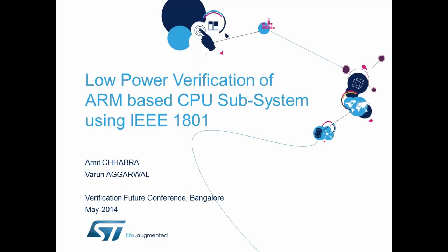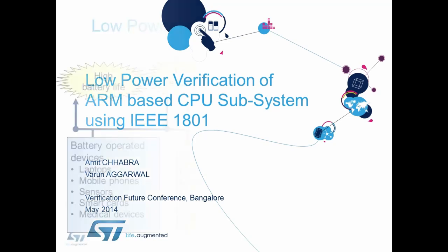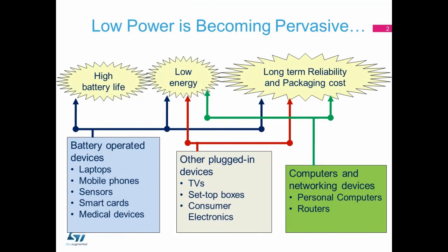Let me start by quoting the recent ITRS roadmap. It says that in the past, performance was the one and only goal, while today minimization of power consumption drives IC design. Reducing power consumption is the key for battery-operated devices, which are not somewhat limited to handheld devices anymore.